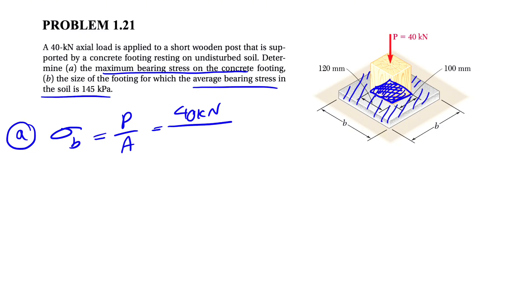One side is 120 and the other side is 100 millimeters. So 120 times 100 millimeters, we're going to do 10 to the minus 6 to get it in meters squared. And to get our numerator in Newtons, we have 40 times 10 to the 3 Newtons.